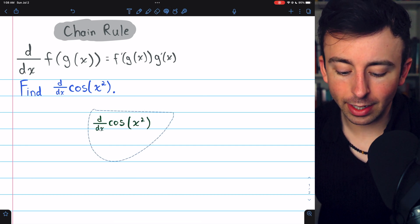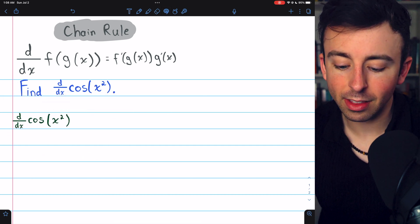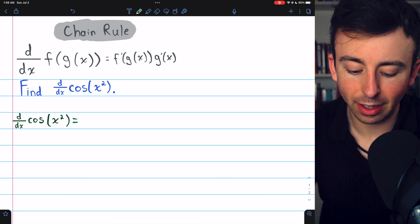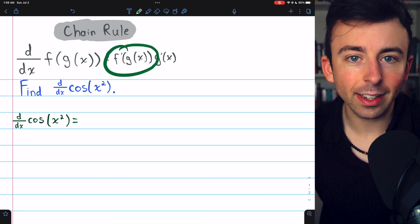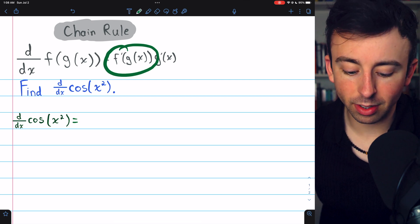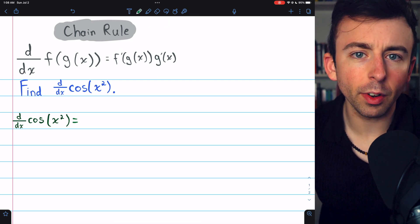So with that in mind, it should be pretty straightforward to take the derivative of cosine of x squared. We have to begin with f prime of g of x. That's the derivative of the outside function, leaving the inside function unchanged.